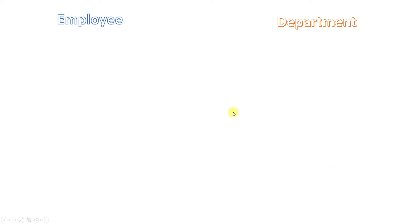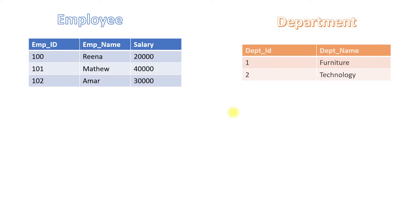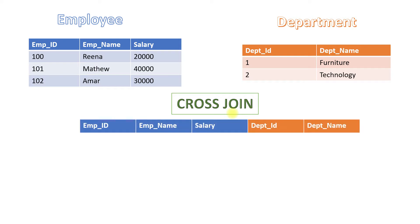Here we have the employee and the department table. In the employee table we have three records, and in the department table we have two records. If we do the cross join, it will be the Cartesian product — that is three into two — we will get six records. In a cross join, all the columns from the two tables are returned in the result set.